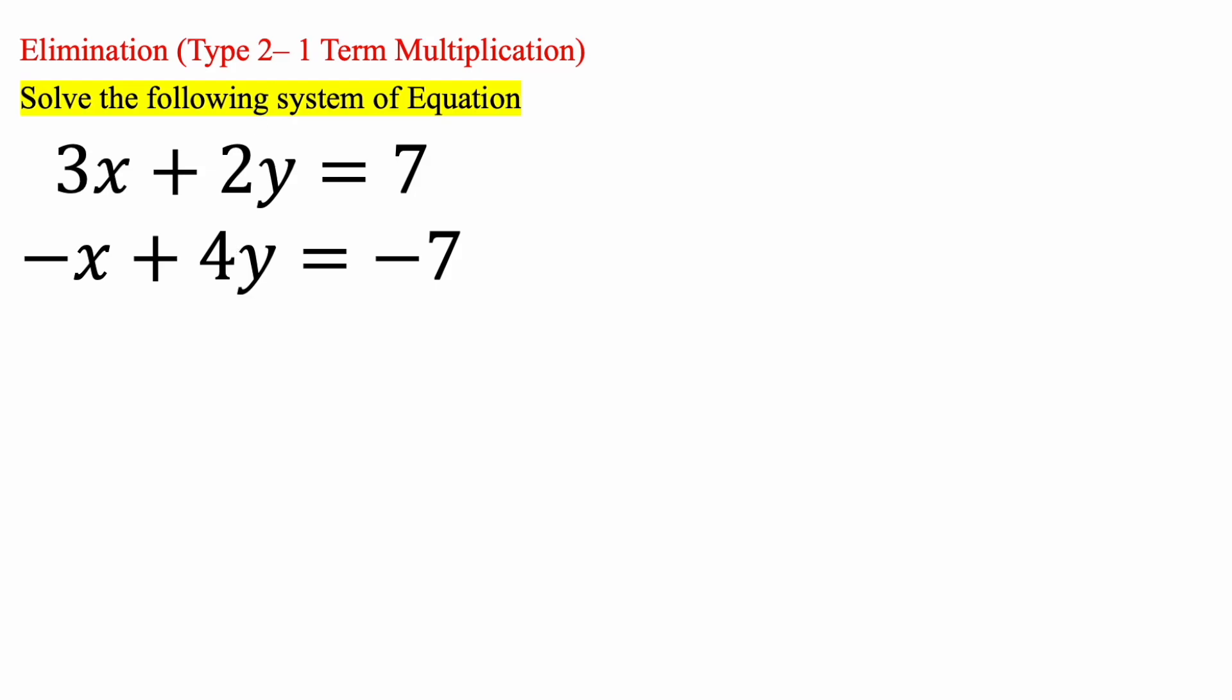This is 2y, this is 4y. So we have two options. Do we want to eliminate x or do you want to eliminate y? Both scenarios, you're only going to have to manipulate one term. I'm going to choose to manipulate this piece. I'm going to multiply it by 3.